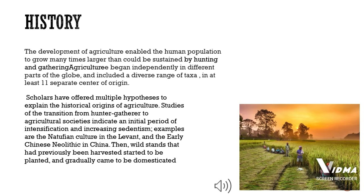Scholars have offered multiple hypotheses to explain the historical origins of agriculture. Studies of the transition from hunter-gatherer to agriculture societies indicate an initial period of intensification and increasing sedentism, examples being the native ancient culture in the Levant and early Chinese Neolithic in China. Wild species that had previously been harvested came to be planned and gradually domesticated.